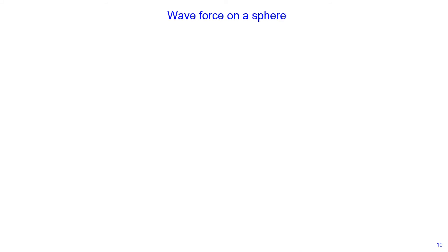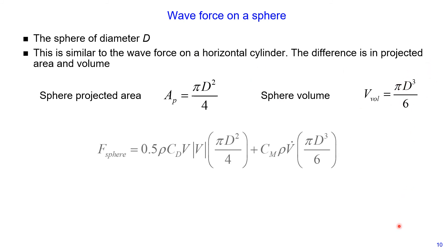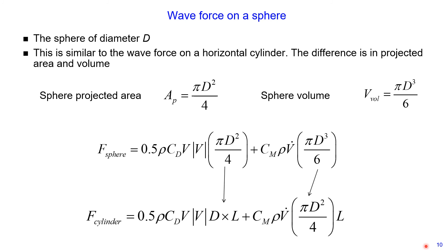Finally, let's consider how to estimate wave-induced force acting on a sphere of diameter D. This is similar to wave-induced force on a horizontal cylinder. The only difference is the projected area and the volume: the projected area of a sphere is pi D squared divided by 4, and the sphere volume is pi D cubed divided by 6. Therefore, the total wave-induced force on a sphere is drag force plus inertia force, analogous to the cylinder formulation — only the projected area and volume differ.